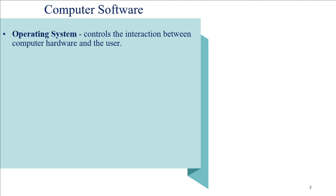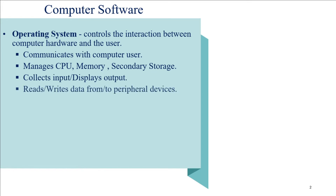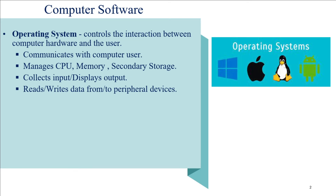The operating system is the most important part of system software. It controls the interaction between the computer hardware and the user. It communicates with the user, manages the CPU, main memory, secondary storage, and I/O devices. It collects input and displays output. It reads and writes data from and to peripheral devices — meaning input devices, output devices, scanners, printers, and communication links all fall under the heading of peripheral devices.